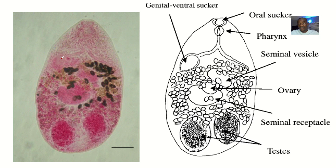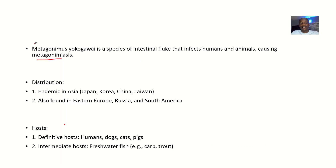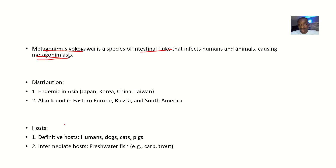There are a lot of pictures for you guys to have an idea of what this organism actually looks like. Metagonimus yokogawai is a species of intestinal flukes that infects humans and animals, and it causes a disease condition known as Metagonimiasis.